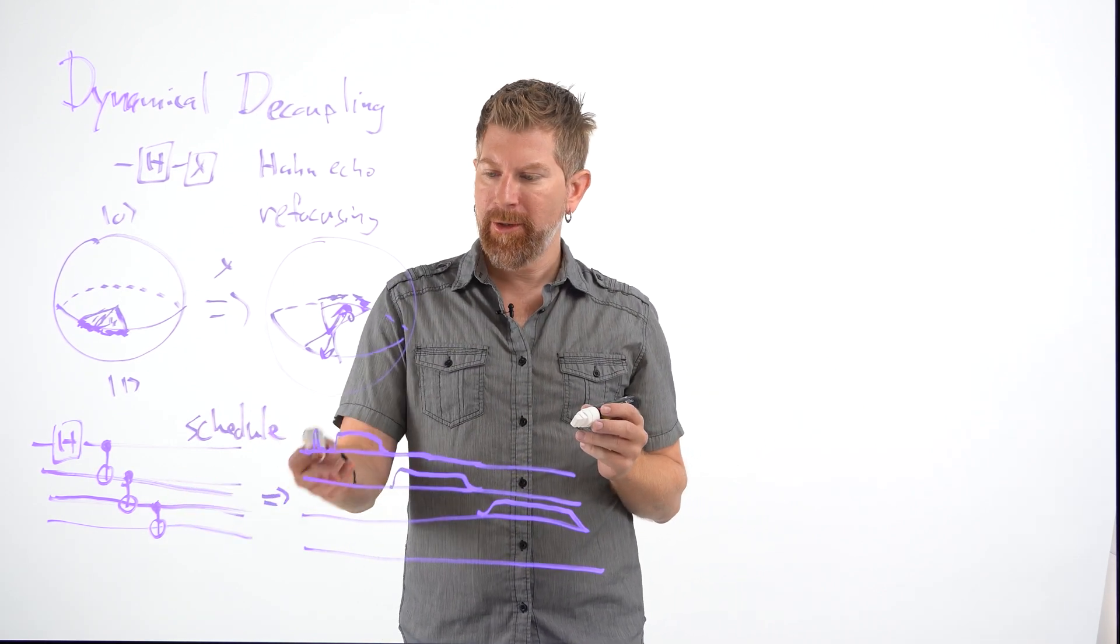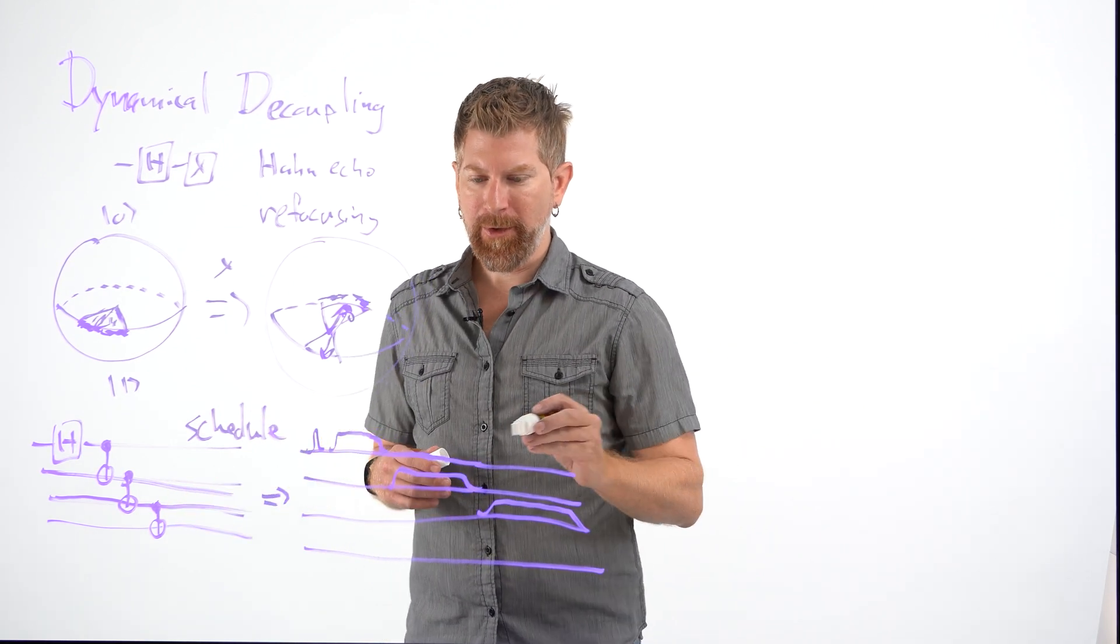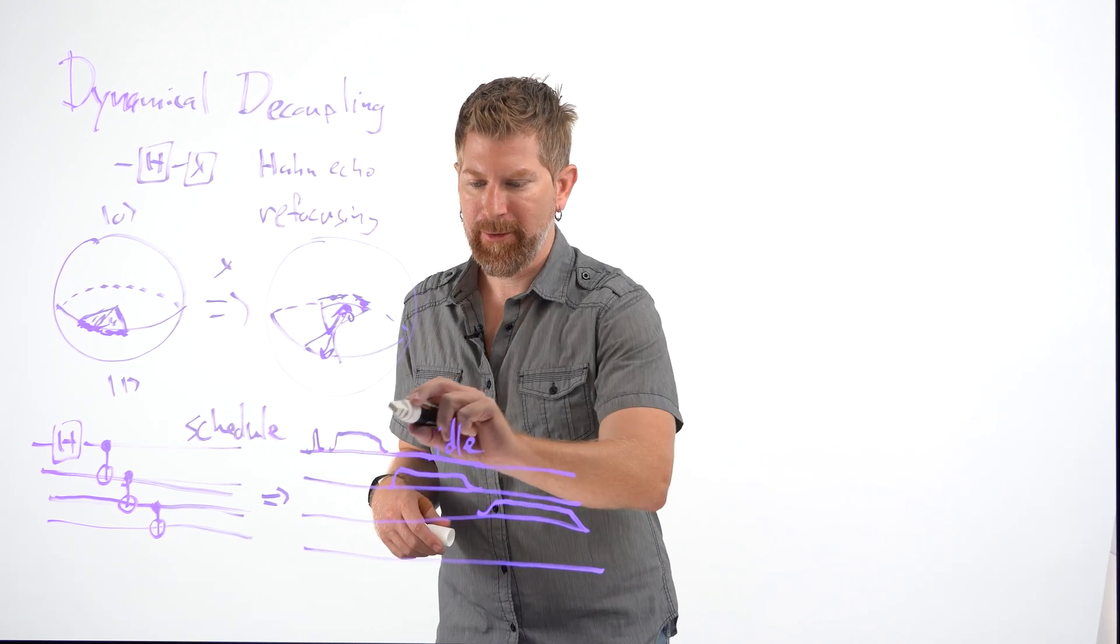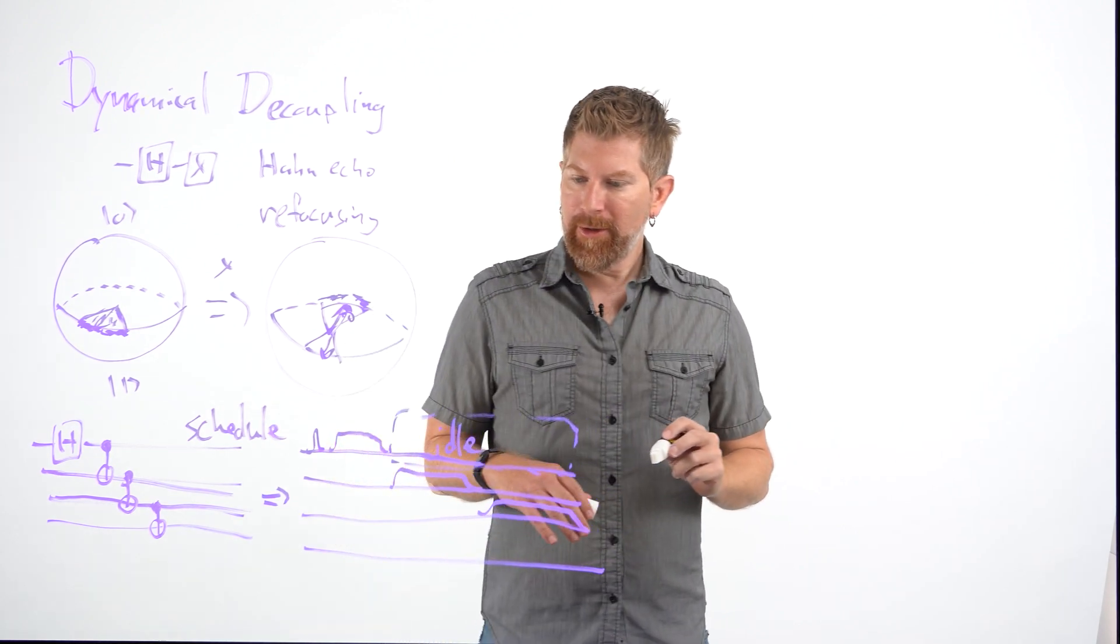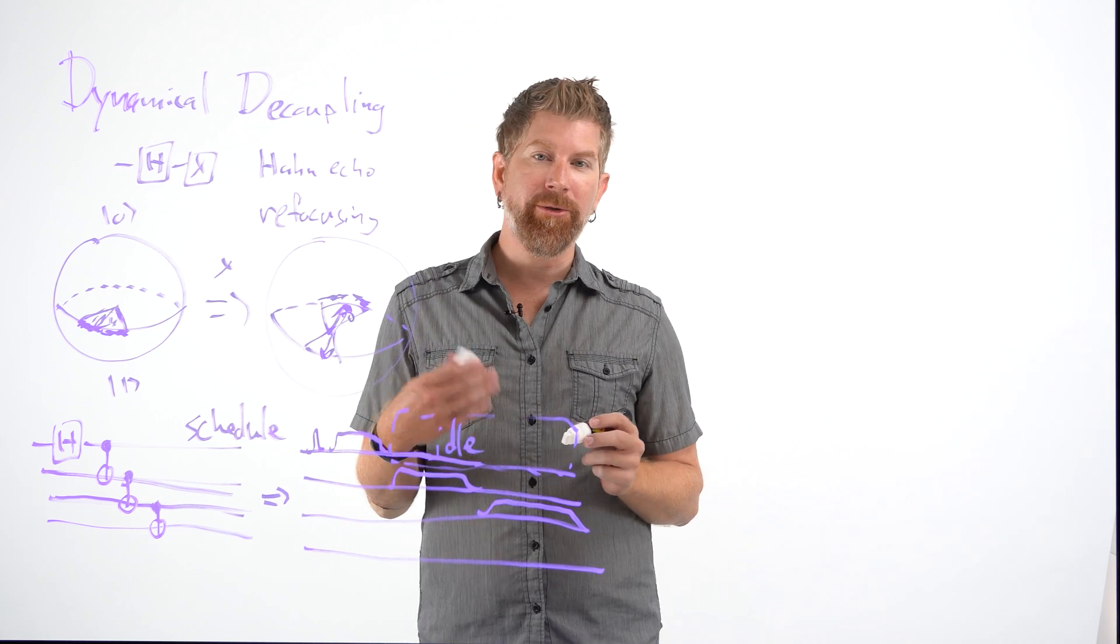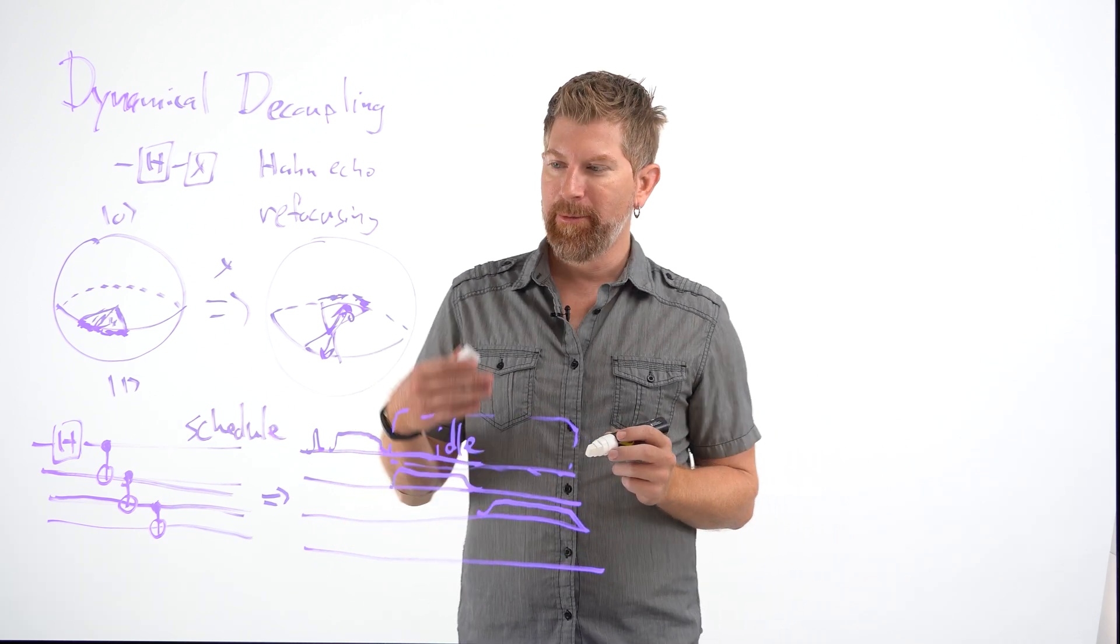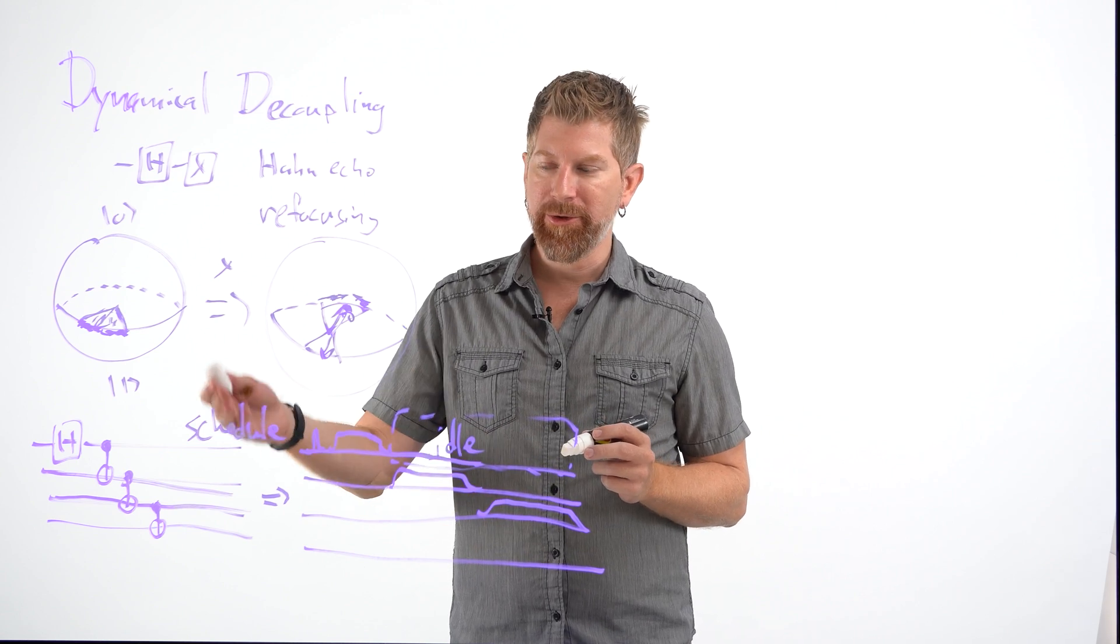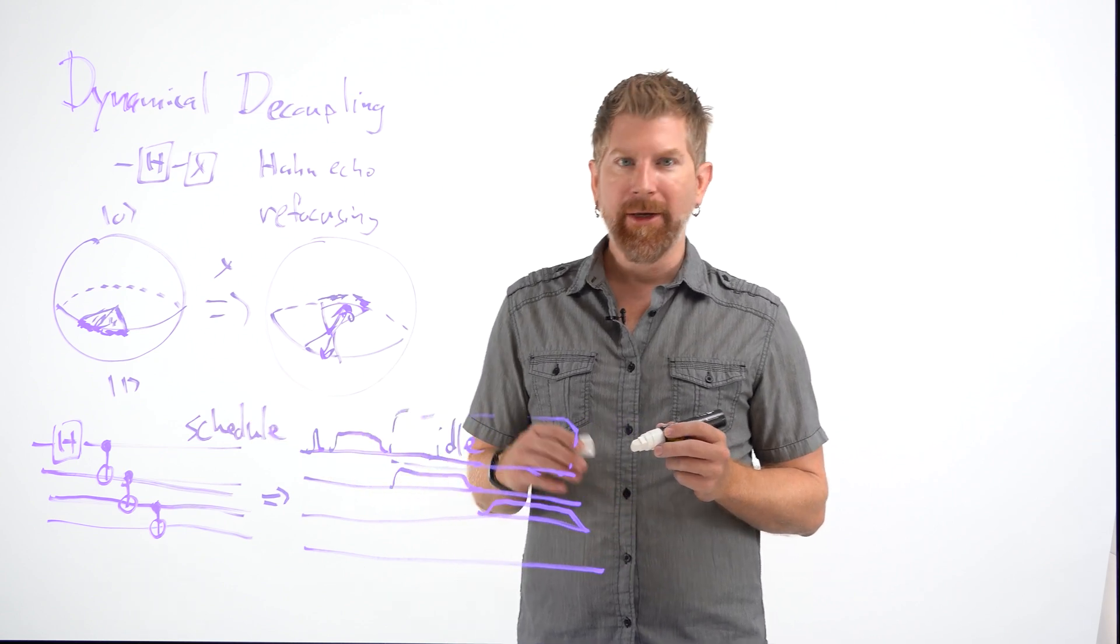So what happens in this case, we have our top qubit here has a lot of idle time where it's just sitting around not doing anything. And just like idle hands, idle qubits are a bad thing too. So what we want to do is occupy the qubit in a way by refocusing it in a similar way that will preserve the phase information. And so how do we do this?